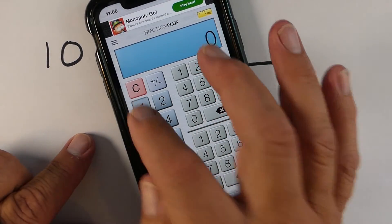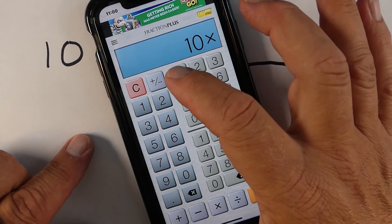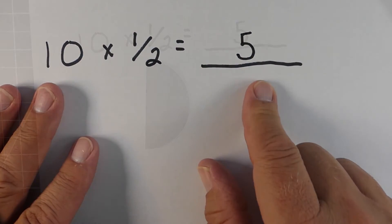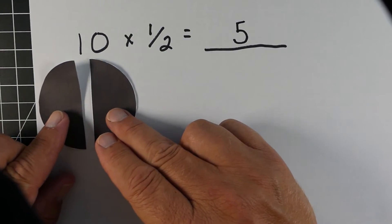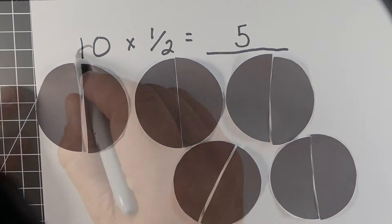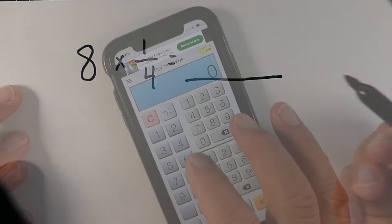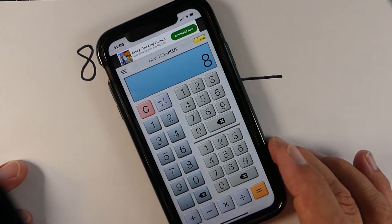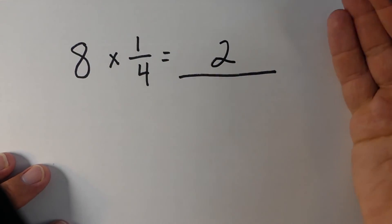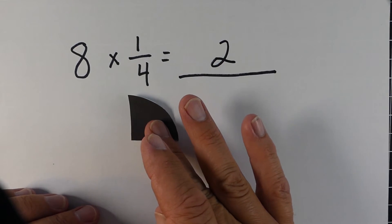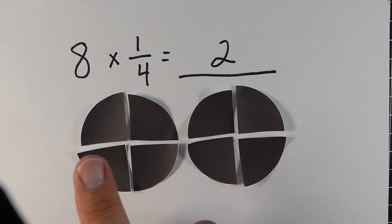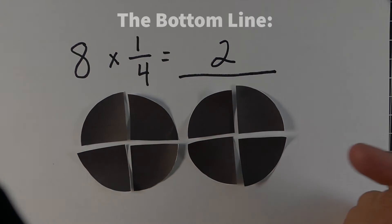We can model this with fractions as well. If I take 10 times 1/2, my answer is going to be 5. The 10 times 1/2 is 5 — it's like saying we have 10 one-halves, and if I have 10 one-halves, they form a total of 5 wholes. Let's do one more example: 8 times 1/4. With the calculator, we take 8 times 1/4 and we get 2, which is less than 8. Multiplying 8 times 1/4 is like having 8 one-fourths. Four of the one-fourths equal 1 whole, and another four-fourths equal another whole — so there's a total of 2 circles.